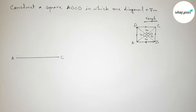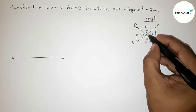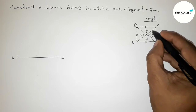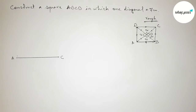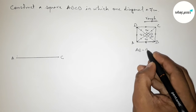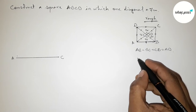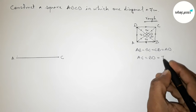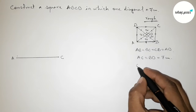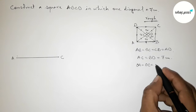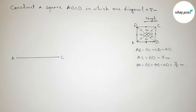The two diagonals AC and BD bisect equally at point O, so OA equals OC and OB equals OD. All these lengths are equal. Writing down: all sides are equal, and also the two diagonals are equal. Since the diagonal is 7 centimeters and both diagonals bisect equally, OA equals OC and OB equals OD equals 7 divided by 2 centimeters.